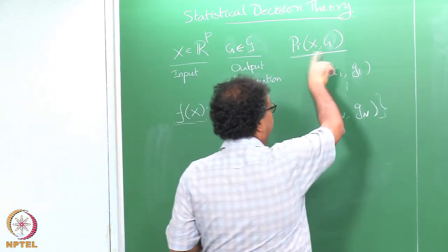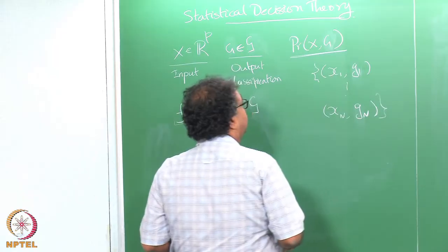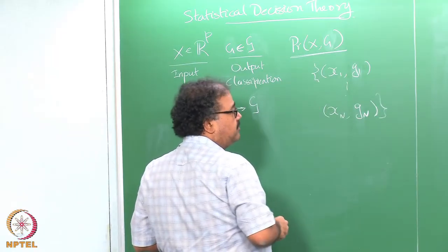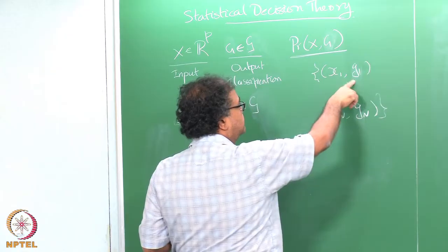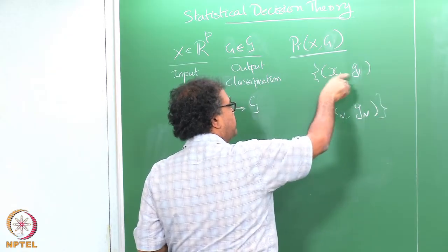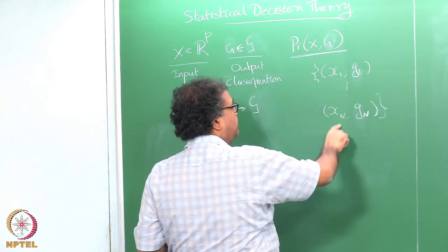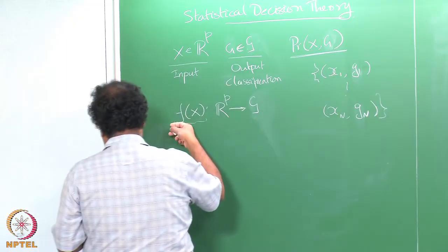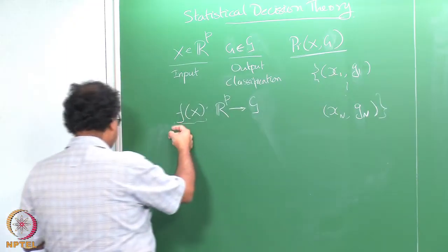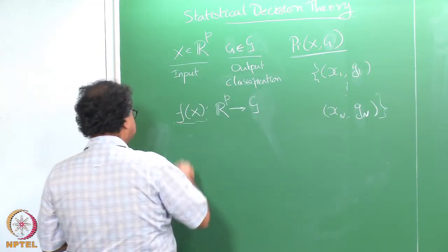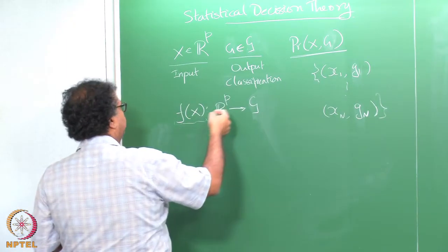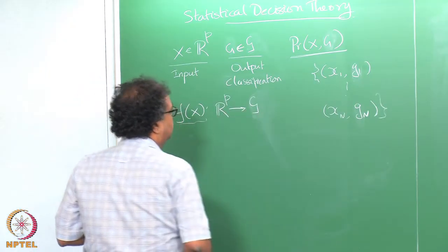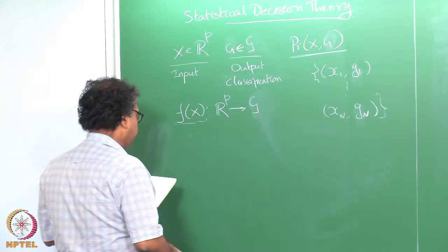Like before, we are going to have a joint distribution on the input and the output, and the training data is going to consist of pairs (x1, g1), (x2, g2), all the way up to (xn, gn). The goal here is to learn a function f that is going to take you from a p-dimensional input space R^p to the discrete space script G.